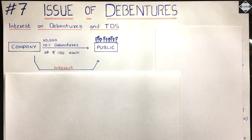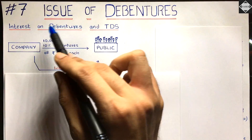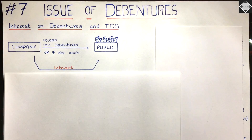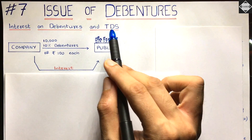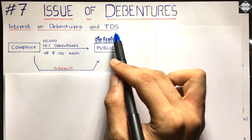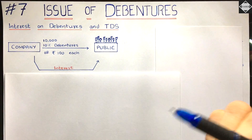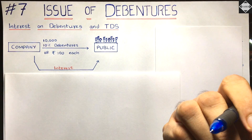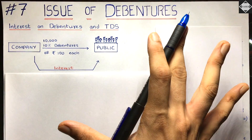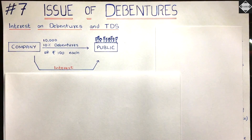Hi everyone, welcome back to Sahab Academy. Today in the seventh video of this chapter, Issue of Debentures, we are going to cover a very simple and easy topic: Interest on Debentures and Tax Deducted at Source. We'll take a practical example, understand each and everything, and then with these same figures we are going to see the journal entries.